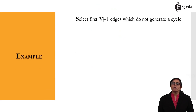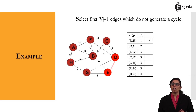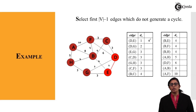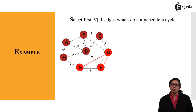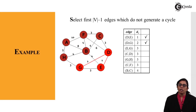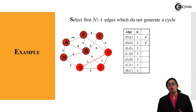We select the first V minus 1 edges that do not generate a cycle. The first edge taken is D-E, with weight 1 in increasing order — it is selected and added to the spanning tree. Next, D-G with the value of 2 is also added to the spanning tree.